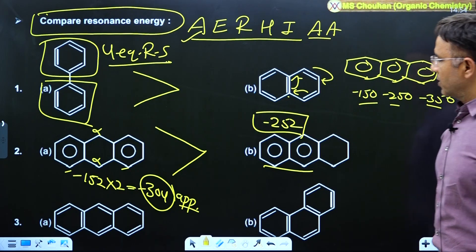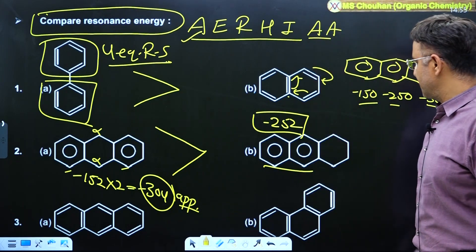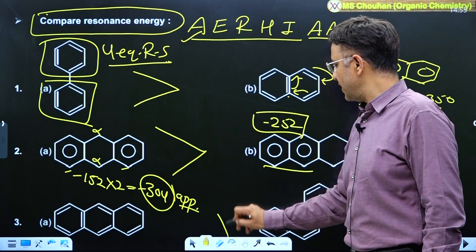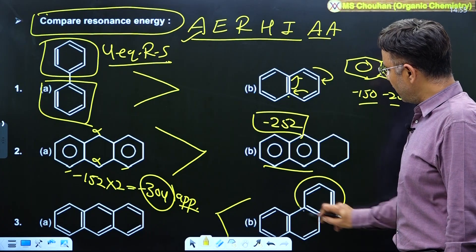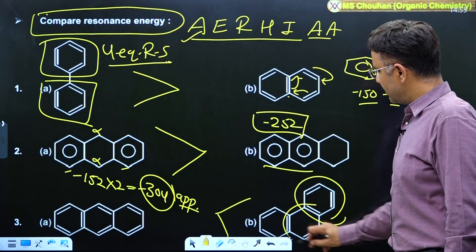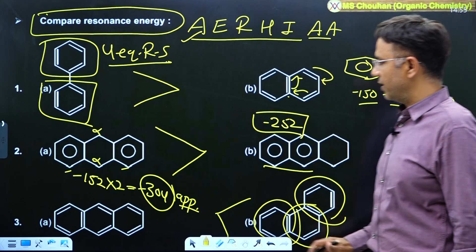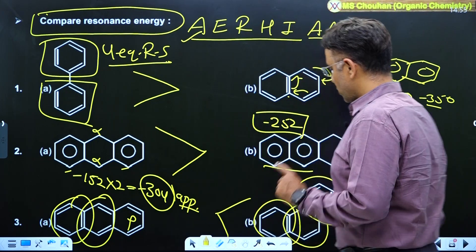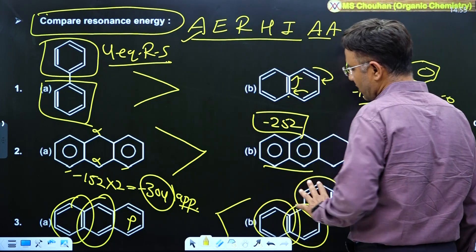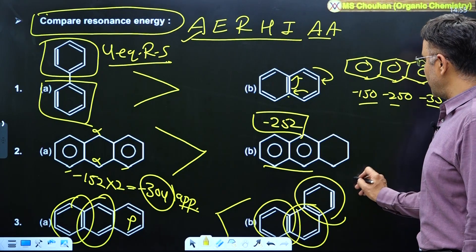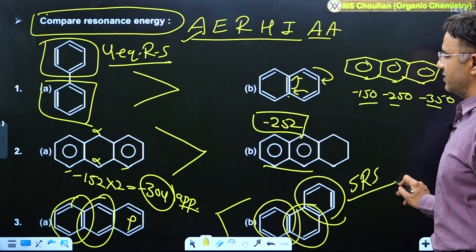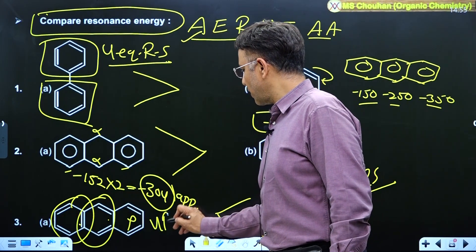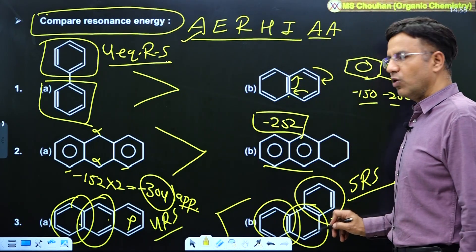In the third example: anthracene versus phenanthrene — which has more resonance energy? Phenanthrene (B) has more resonance energy because all three individual rings are individually aromatic. In anthracene, two rings are individually aromatic but the middle ring is not individually aromatic. Phenanthrene also has 5 resonating structures compared to anthracene's 4. More RS and more stable RS means more resonance energy.